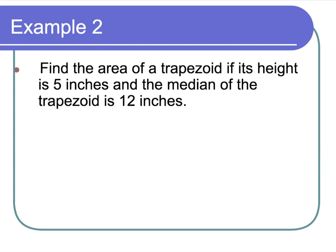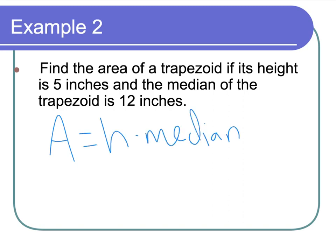Find the area of a trapezoid if its height is 5 inches and the median of the trapezoid is 12 inches. Remember when we wrote down that formula: area equals H times median? Here it is. Height is 5, median is 12 — that gives us 60 inches squared.